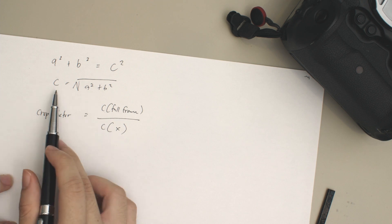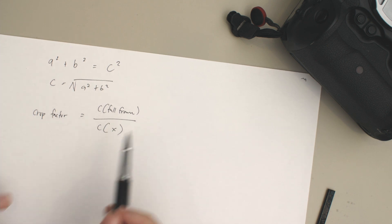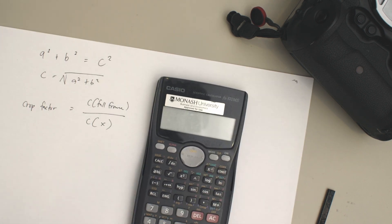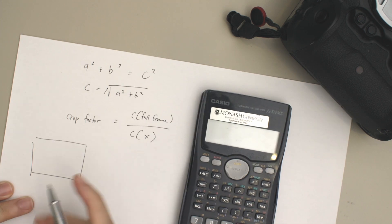First, we obviously got to find c. Now, the great thing about full frame is it's a constant. So regardless of whatever camera brand you're using, the value is going to be the same. I'm going to bring out my calculator right here. Shout out if you're from Monash—you're from the best uni in the world.